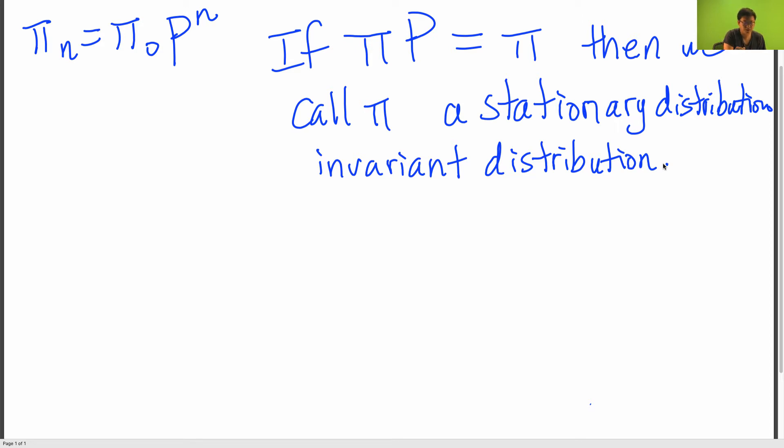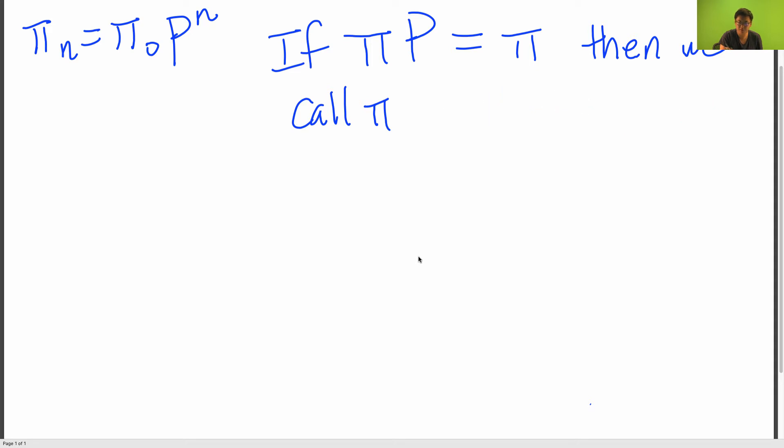And to find such a distribution, we typically just solve this system of linear equations: pi P is equal to pi. So now let's go over an example of how to find a stationary distribution in a Markov chain.